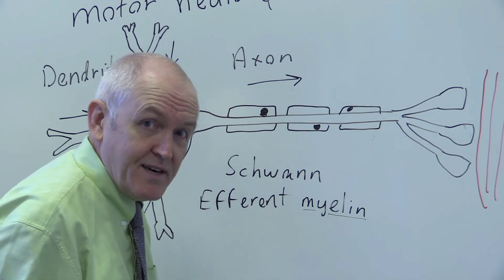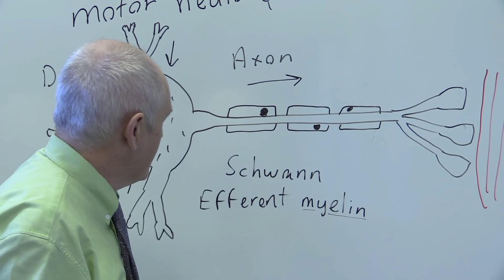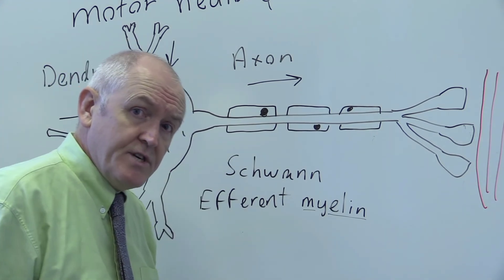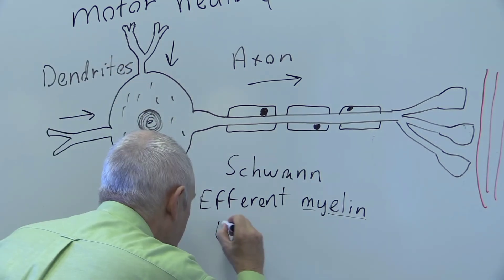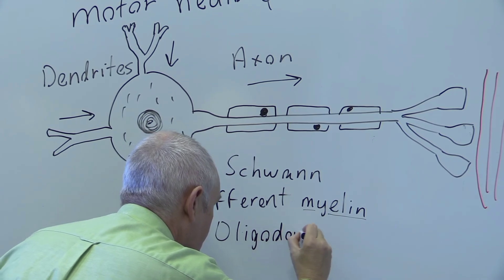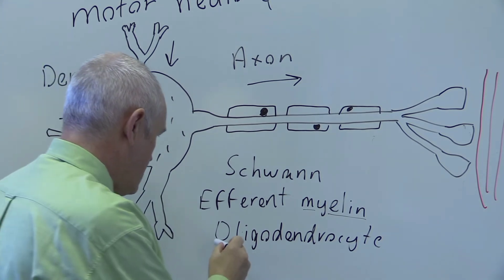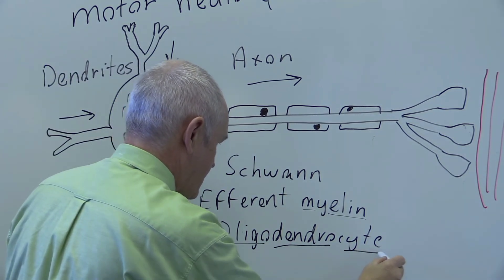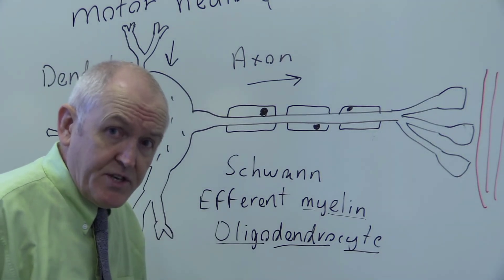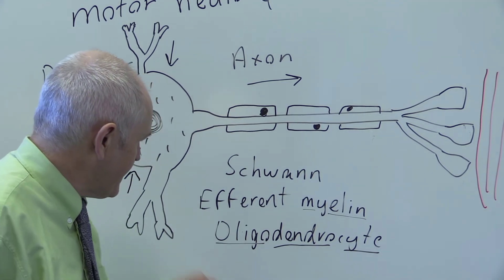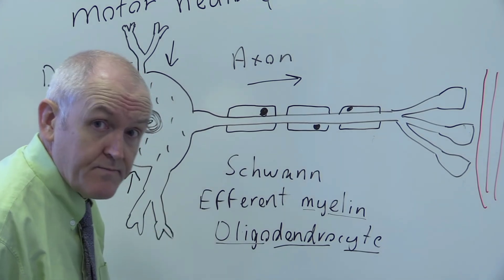Even though you have only one nerve cell, it is supported by hundreds of other non-nerve cells — in this case Schwann cells in the peripheral nervous system. In the central nervous system it's different: myelin is produced by another type of cell called an oligodendrocyte. The oligodendrocyte is the cell that forms the myelin sheath in the central nervous system, and it's actually the cell that's damaged in multiple sclerosis.